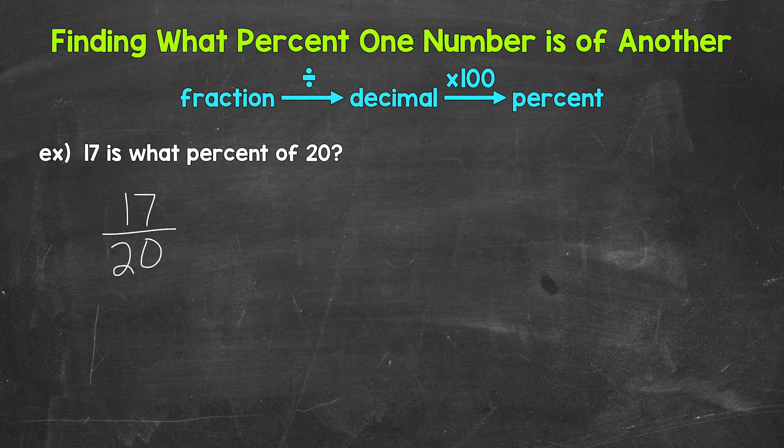We have the part 17 over the whole amount, 20. So the part over the whole when we set this up as a fraction. The part out of the whole amount.